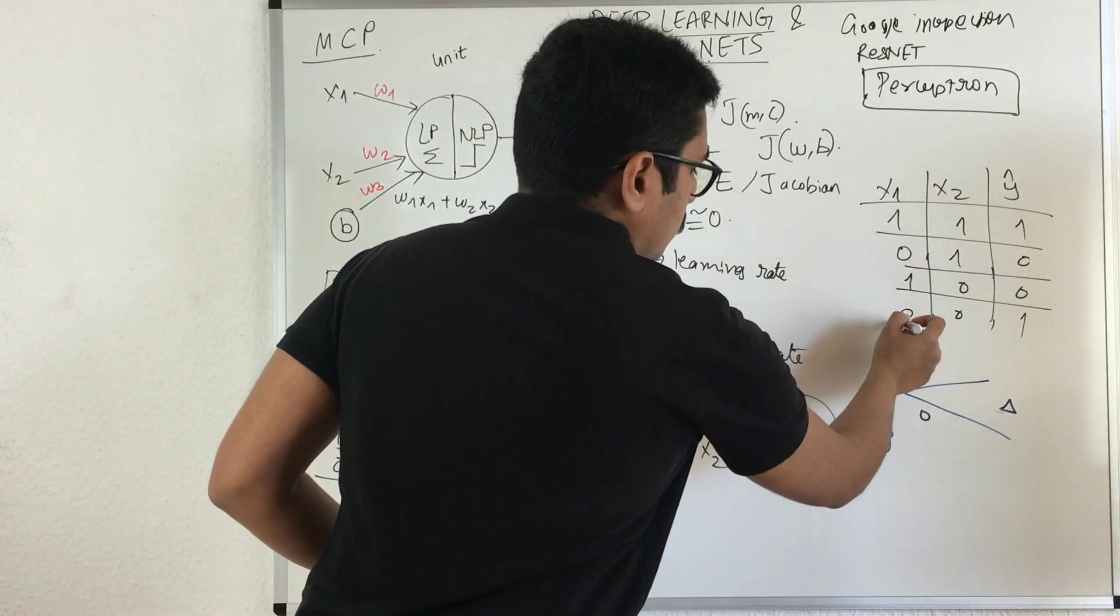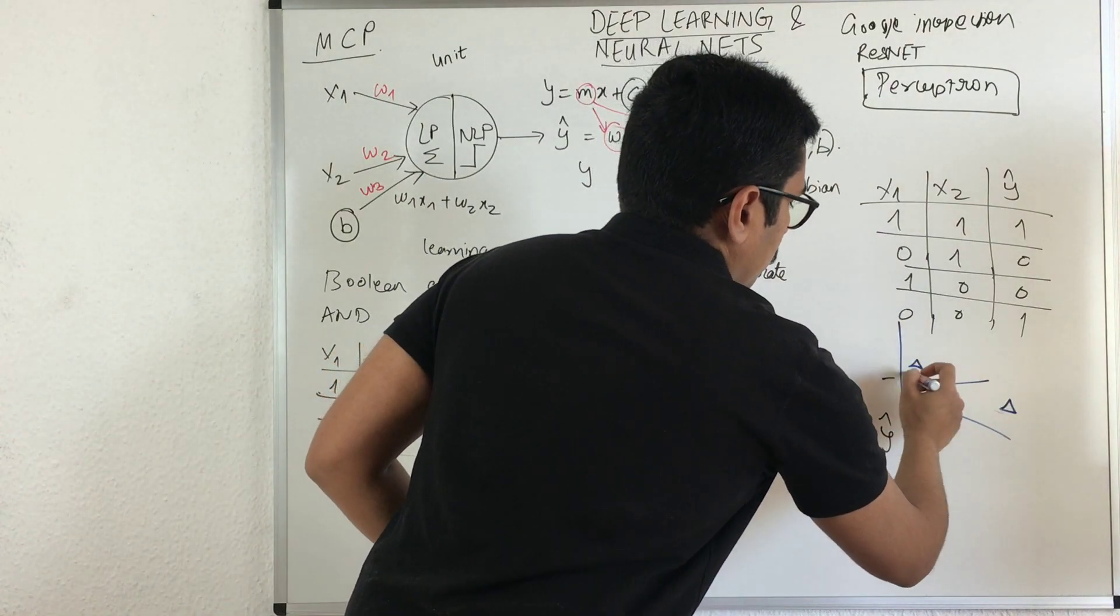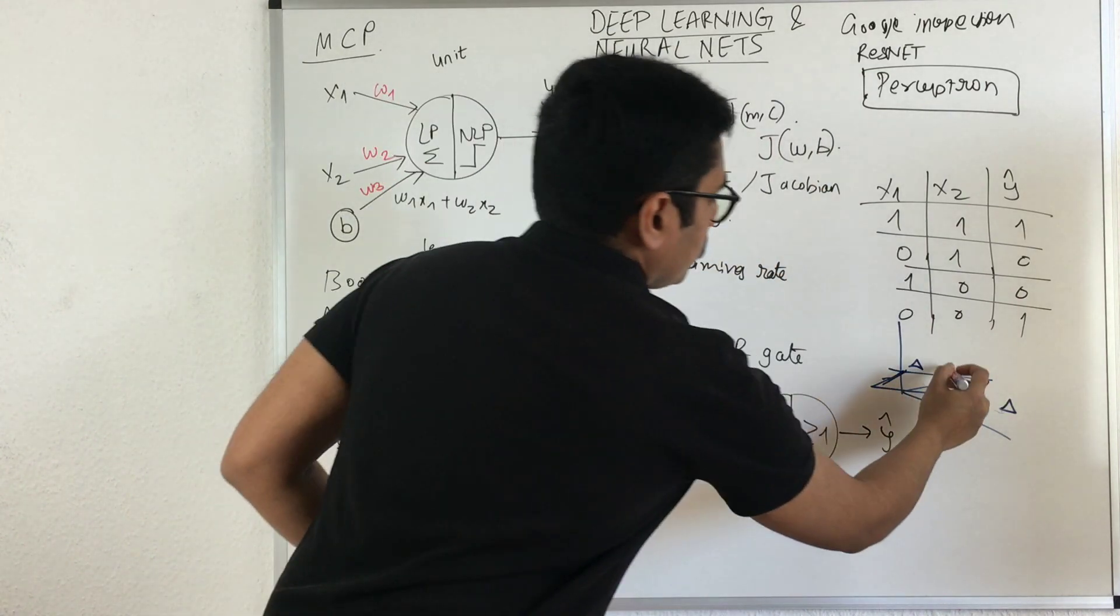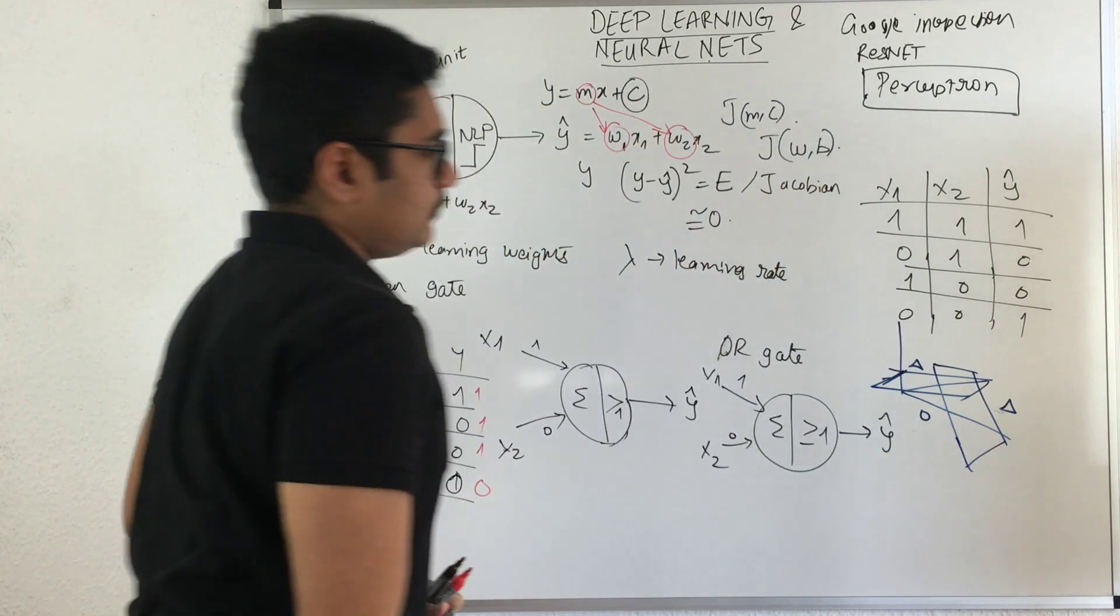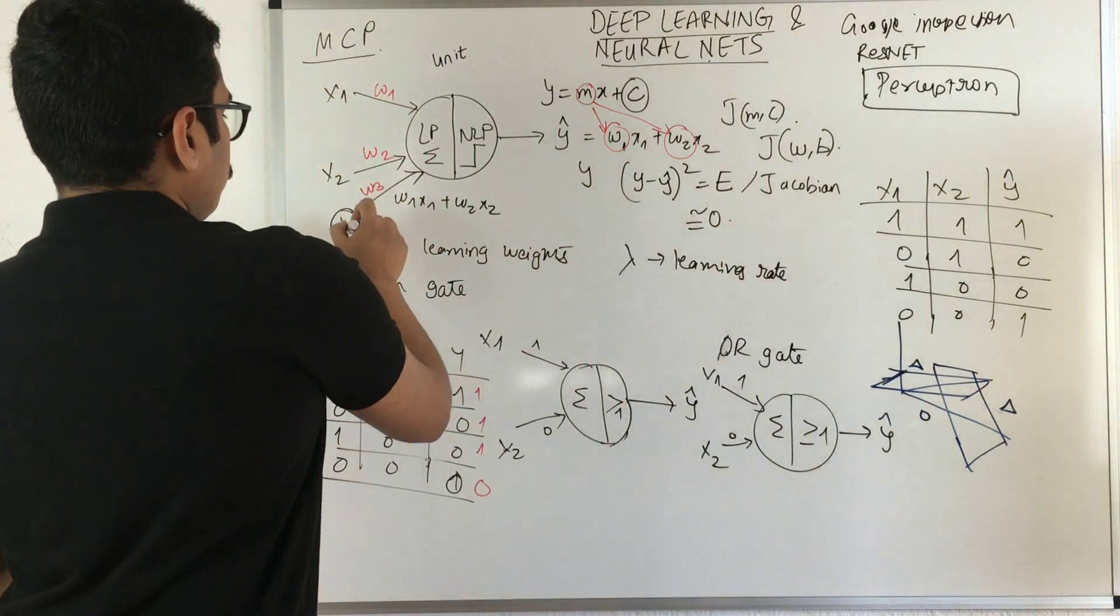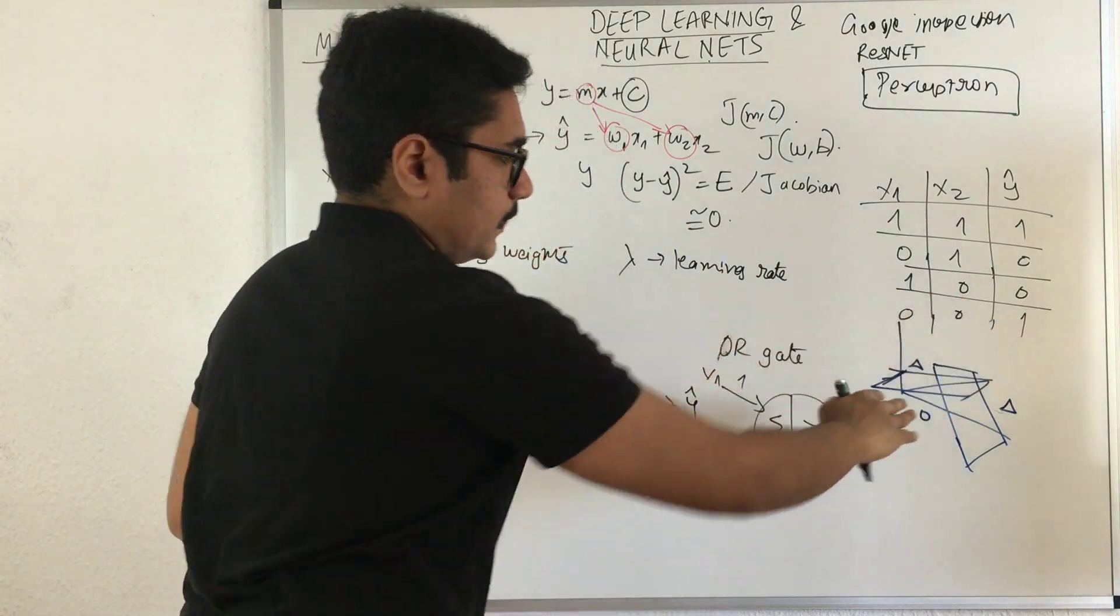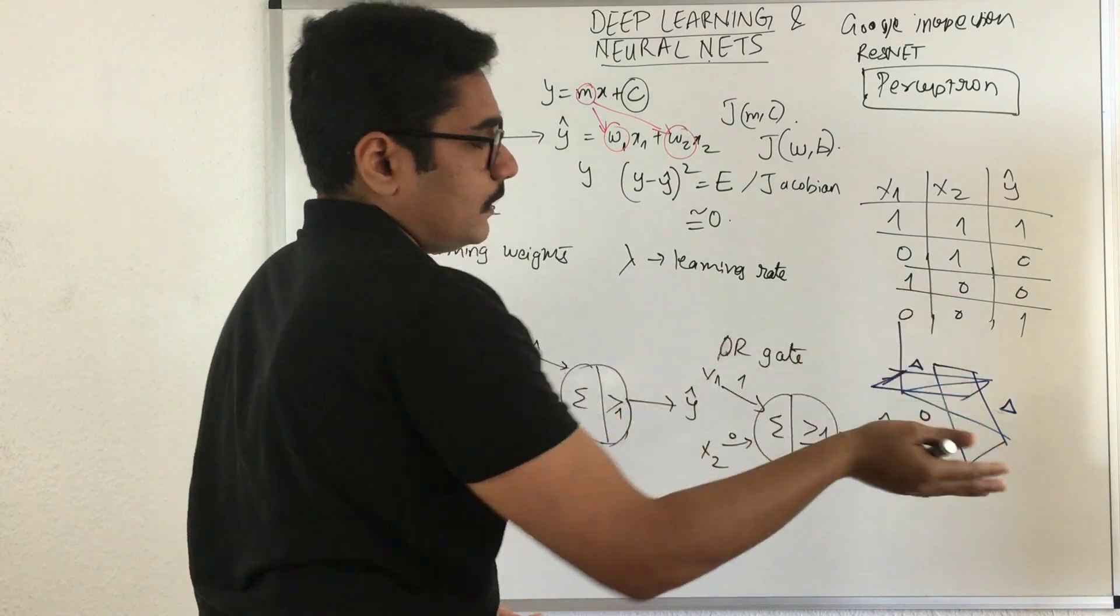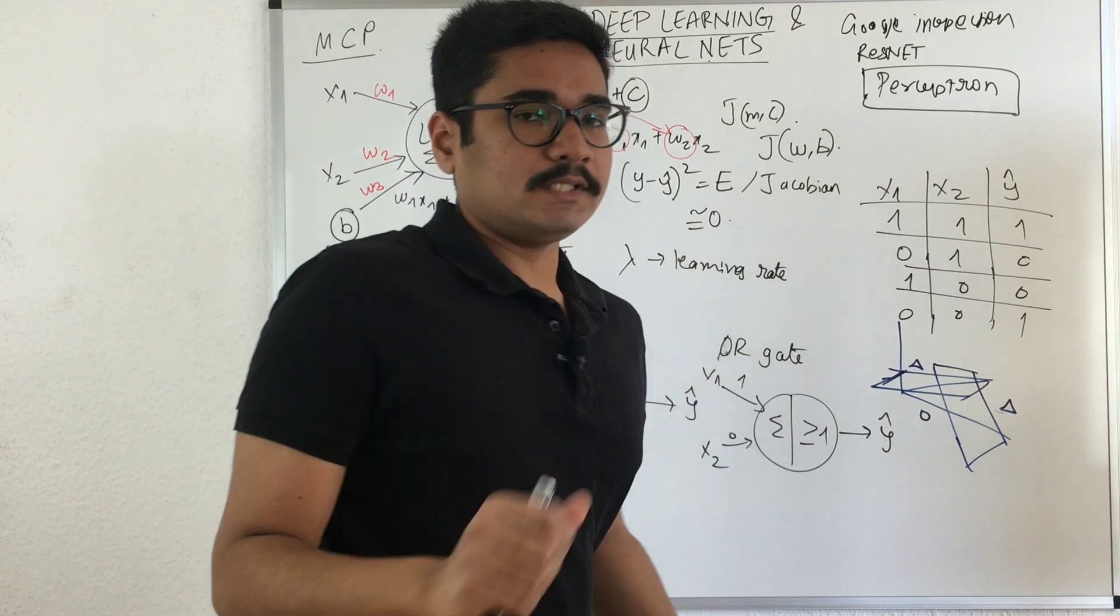What they essentially did is they projected to a higher dimension. They constructed a hyperplane and they could essentially separate these two instances by having different orientations of this plane in that space. By adjusting different hyperplanes with the help of this bias, you can adjust this hyperplane. They can change or make this linearly separable, which was not the case in two dimensions, but they could achieve it in three dimensions.